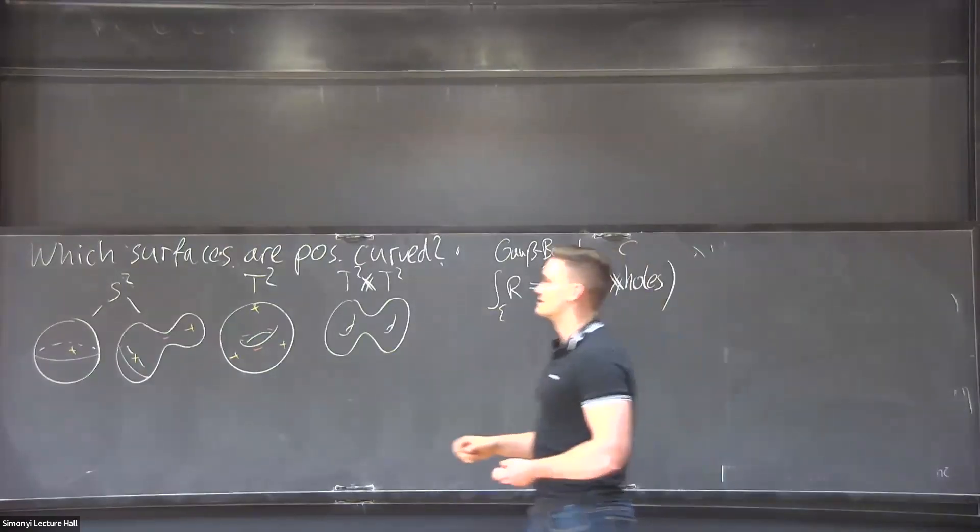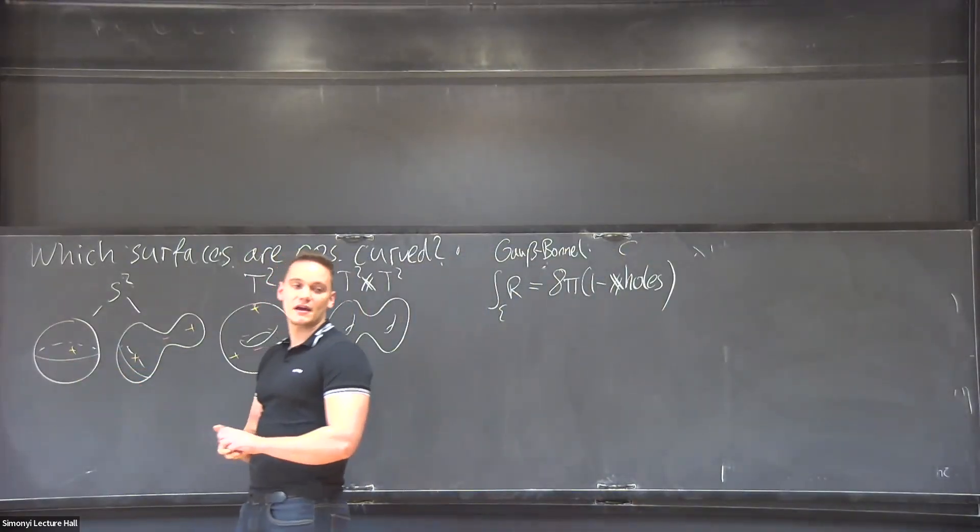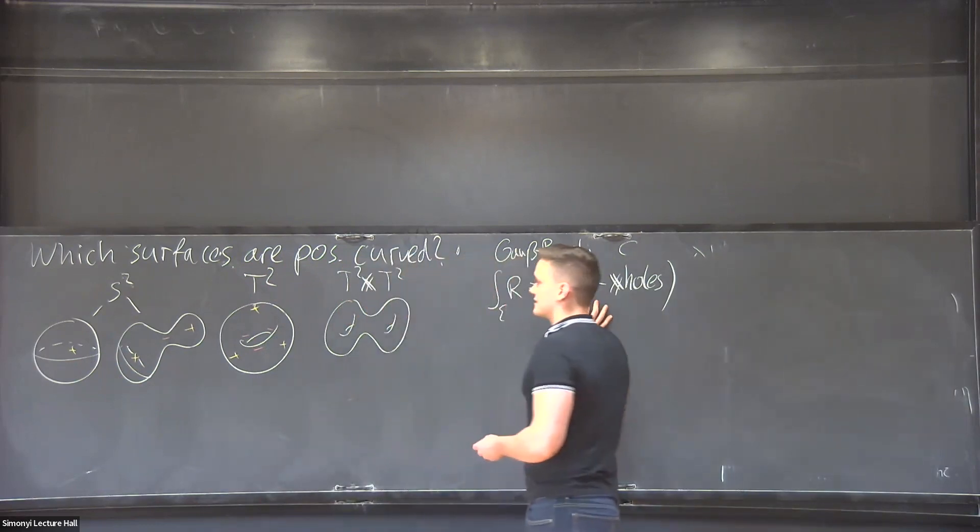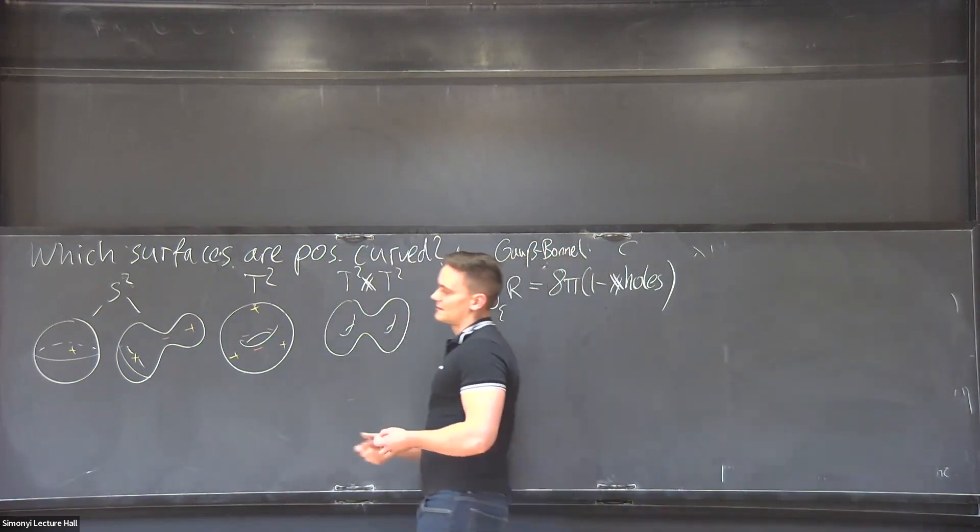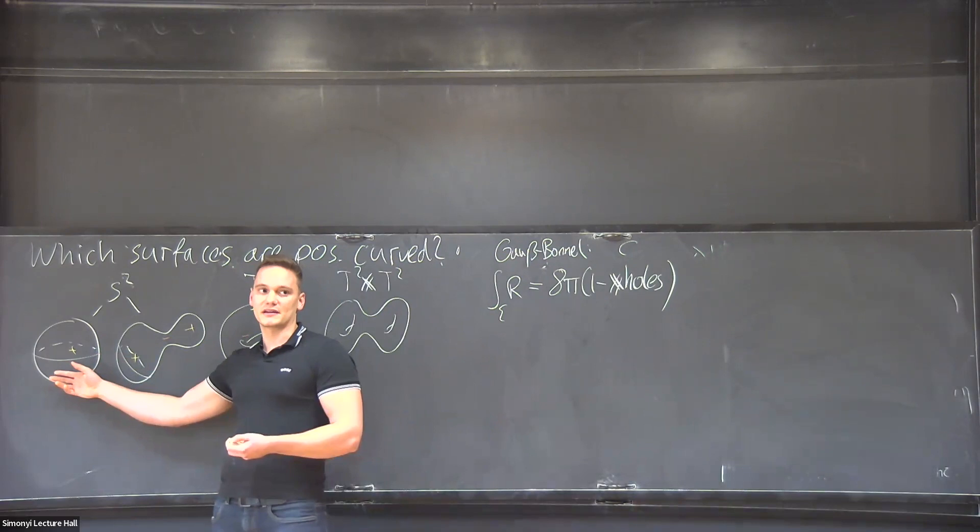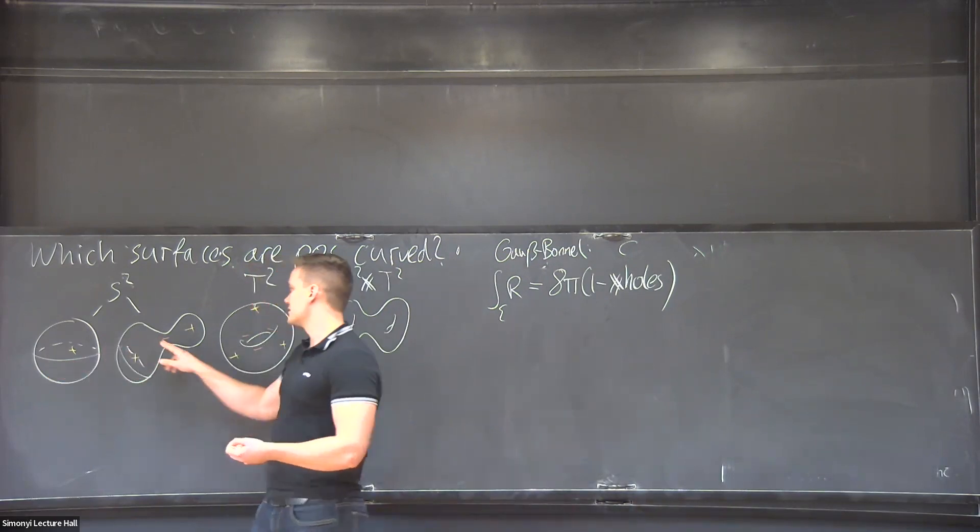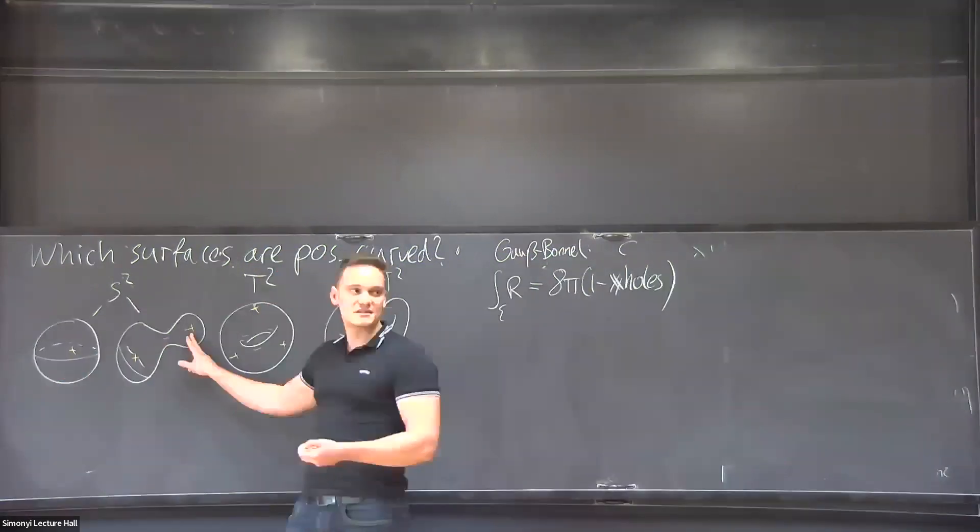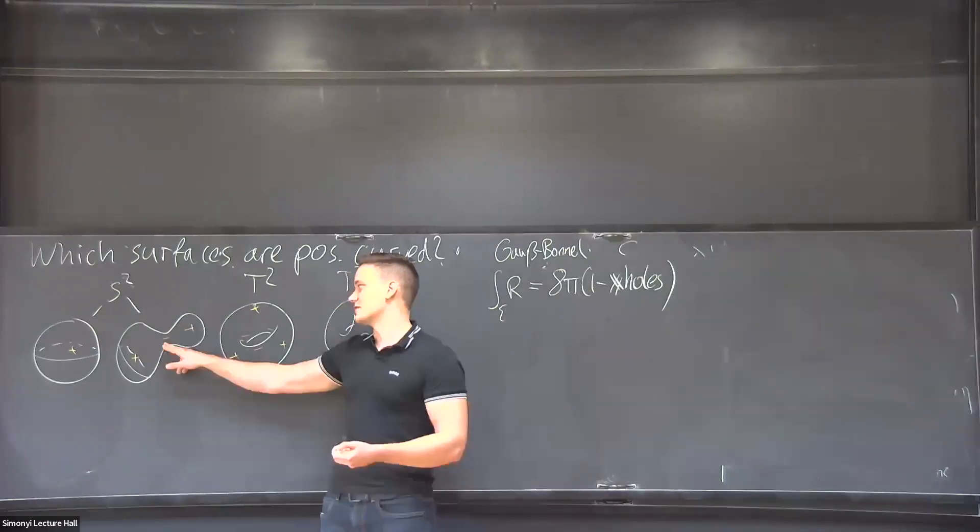So, for instance, in the sphere, we don't have any holes. So the right hand side will be positive, which means that we can have everywhere positive curvature, but also means the additional positive curvature we have introduced here will be exactly the same amount as negative curvature here.